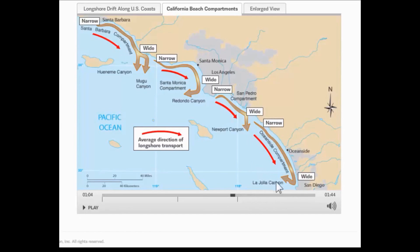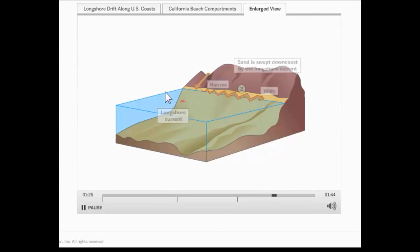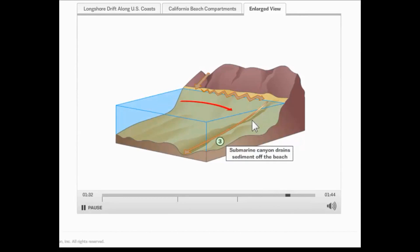A beach compartment is an area in which sand arrives at the beach, moves along the beach, and eventually leaves the beach down a submarine canyon. Looking more closely at the Oceanside Compartment, we can imagine sand coming down to the beach from rivers, and also to some degree from bluff erosion. The sand then moves south along the beach because of longshore drift, and when it reaches the head of one of these submarine canyons, it drains down the canyon out onto the ocean floor. Once it does that, it's pretty much gone — you can't get it back very easily.